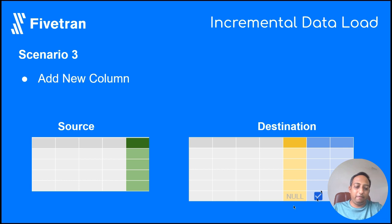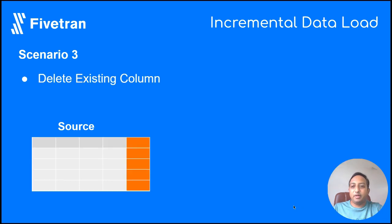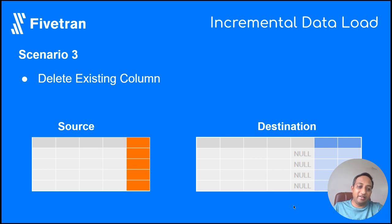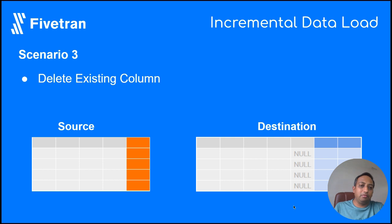If a column has been deleted at your source, FITRAN does not delete the column at your destination. Instead, it nullifies the values. This ensures that downstream systems, scripts, or stored procedures you've written against your destination database using that column will continue to function as-is.